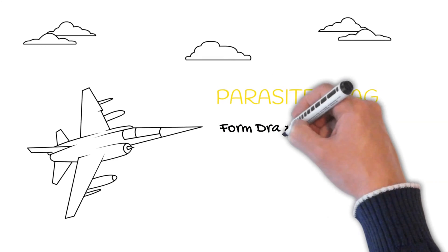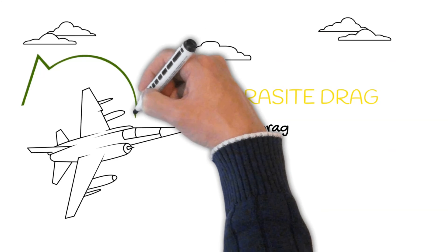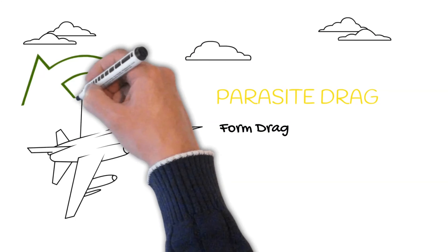There are three types of parasite drag. The first one is form drag. That's basically air going around the shape of the aircraft.